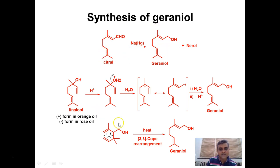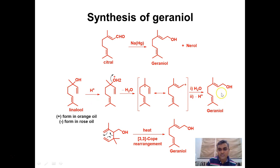Another method of synthesis of geraniol starts from the linalool molecule. Linalool is a monoterpenoid and an allylic tertiary alcohol. Under acidic conditions it undergoes allylic rearrangement and we get a geraniol molecule. Carbocation chemistry is involved here, and a similar kind of carbocation chemistry is required for understanding the biosynthesis of terpenoid molecules.